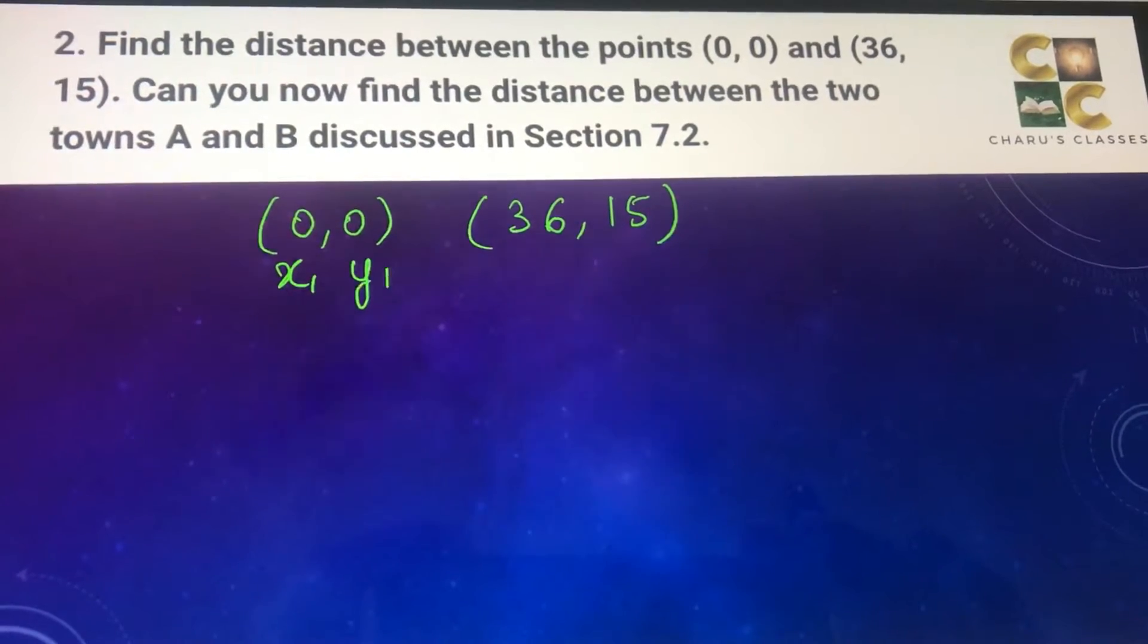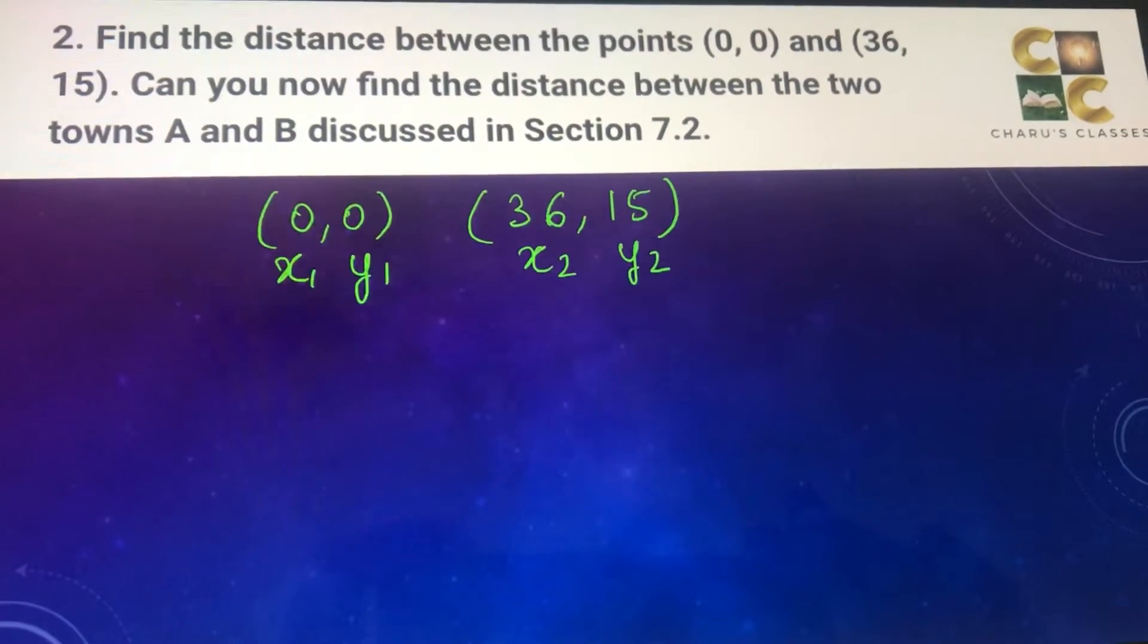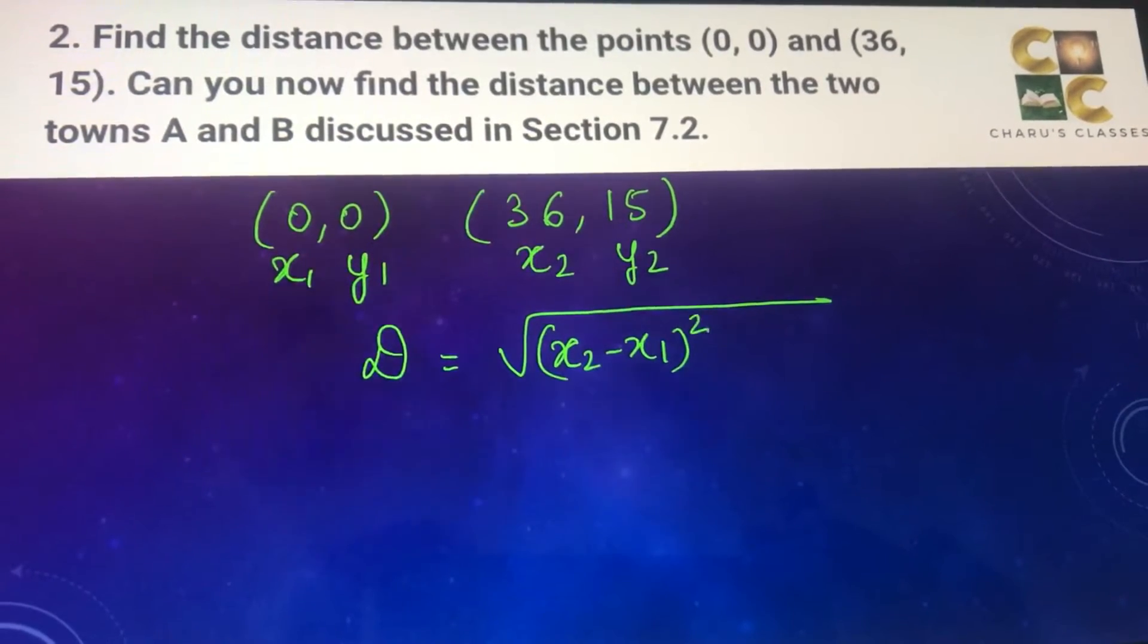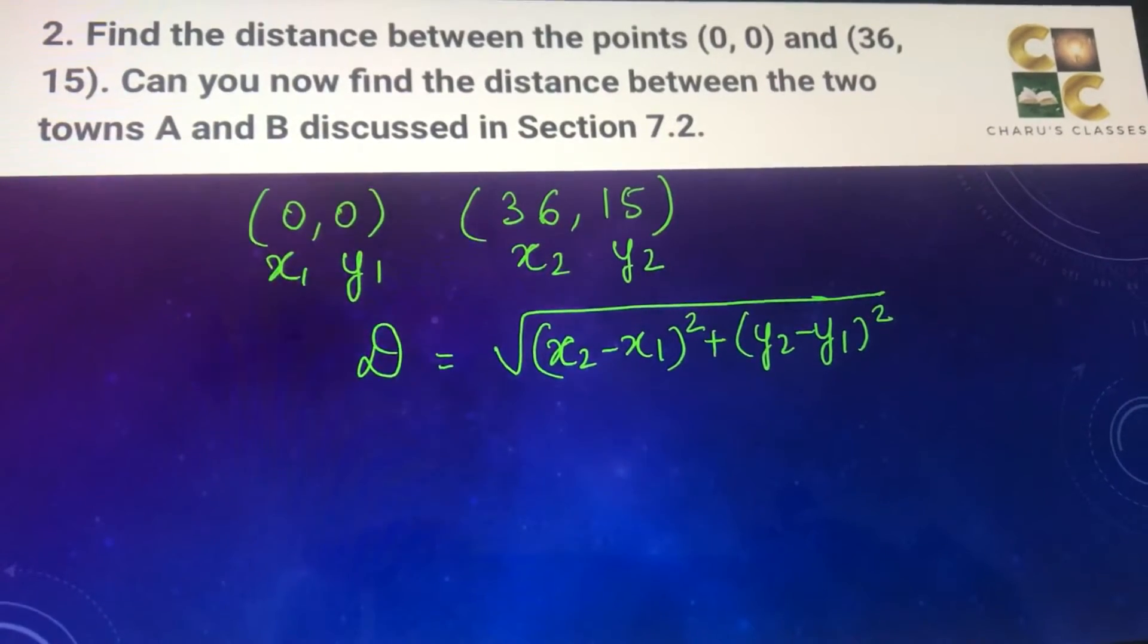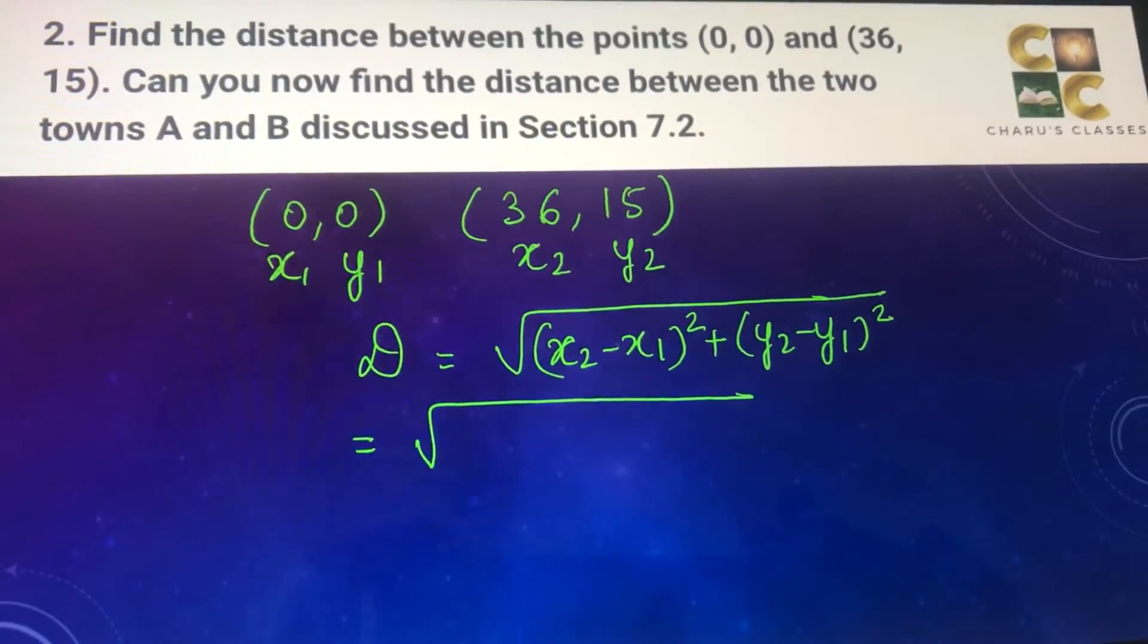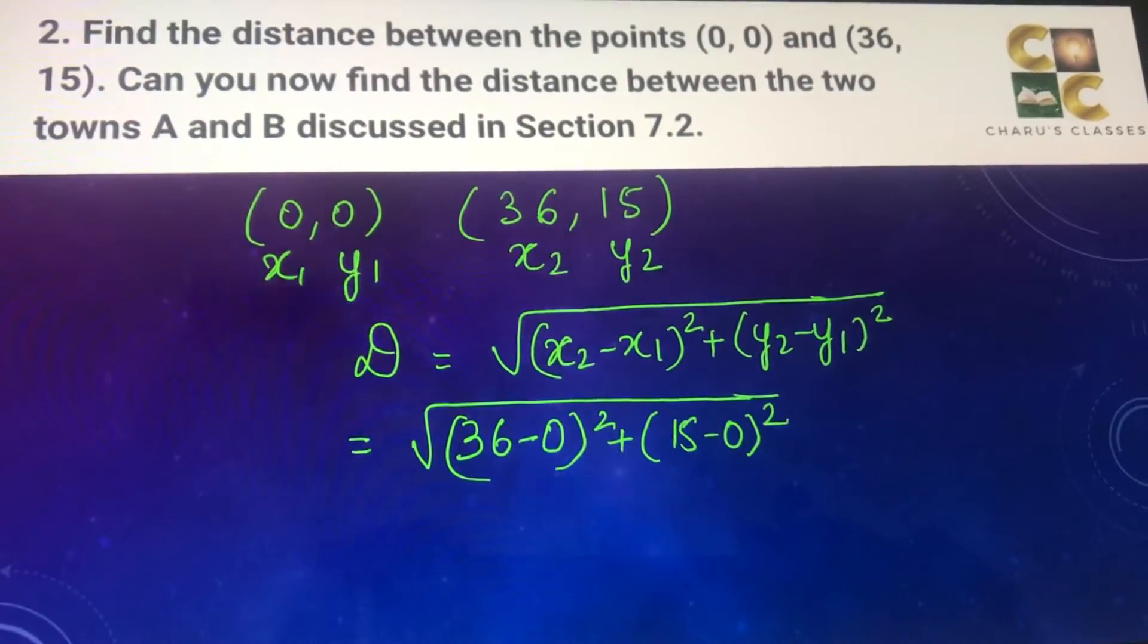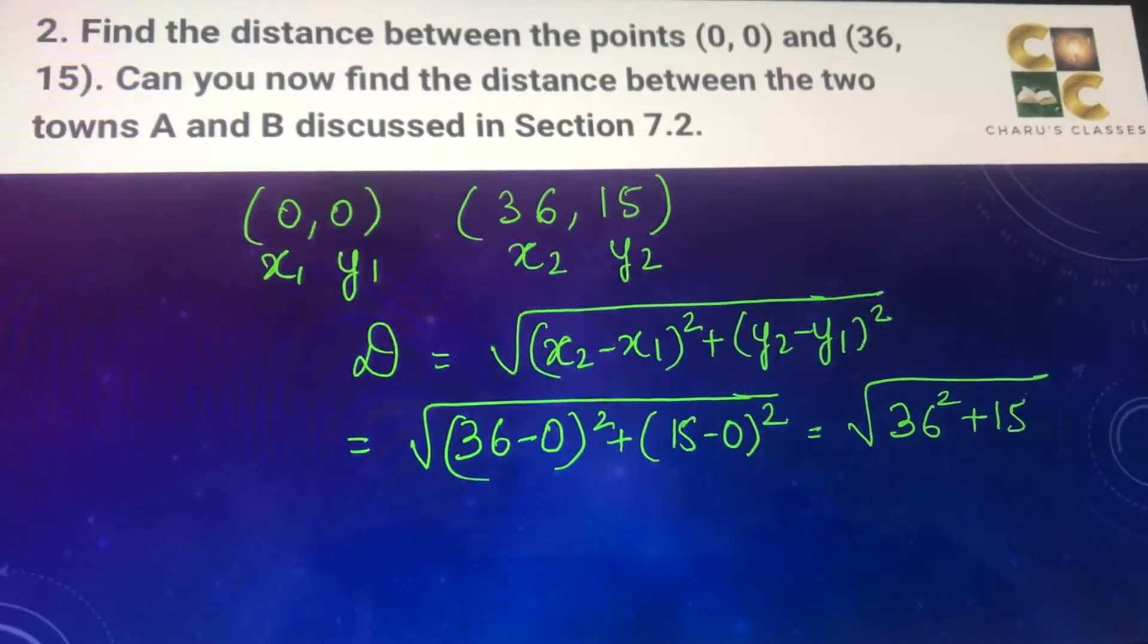So this is x1, y1 and this is x2, y2. We'll find the distance using the distance formula: d = square root of (x2 - x1)² plus (y2 - y1)². Let's substitute the values: this is (36 - 0)² plus (15 - 0)², that is square root of 36² plus 15².